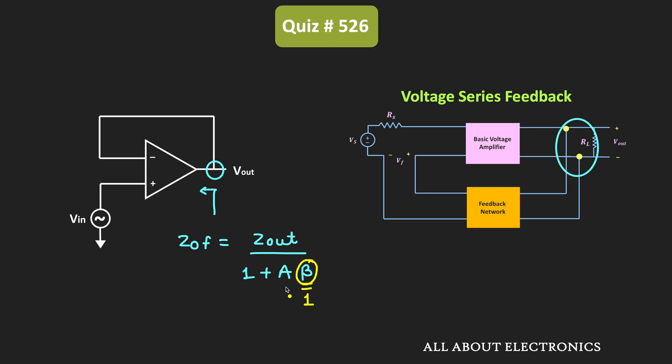Here, A is a function of frequency. Because typically we assume that with a change in frequency the amplifier gain remains constant, but actually it is also a function of frequency.